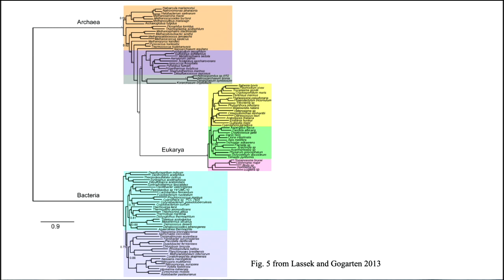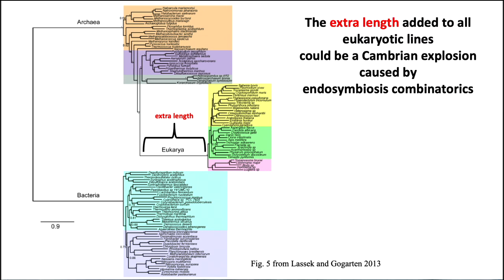Here's a phylogenetic tree where eukaryotes in the middle show extra length in their diversity. Maybe that extra length has been produced by the combinatorics of bacteria getting together and engulfing each other. Maybe the extra length added to all eukaryotic lines is a kind of Cambrian explosion caused by the combinatorics of endosymbiosis.